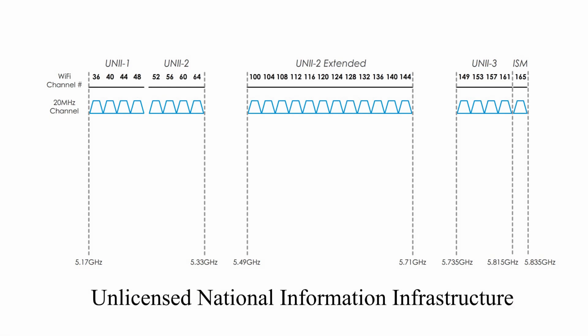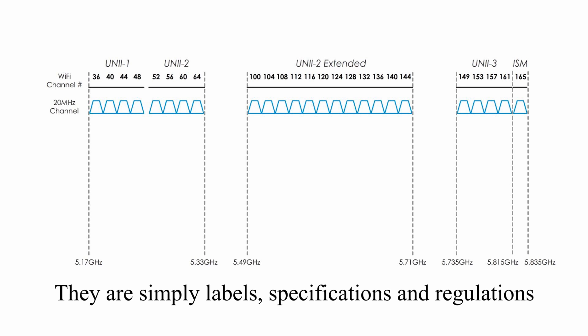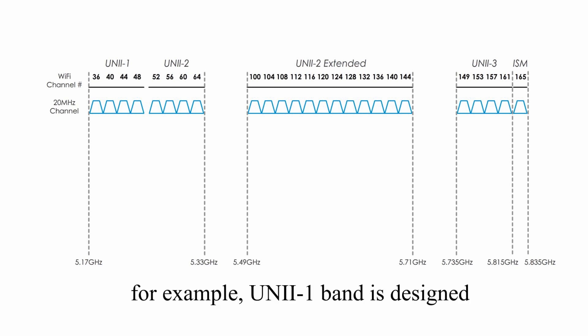UNII stands for the Unlicensed National Information Infrastructure. ISM stands for Industrial, Scientific, and Medical. These are simply labels, specifications, and regulations for different possible bands. For example, UNII-1 band is designed mainly for indoor Wi-Fi network. These labels are not our focus in today's lesson.